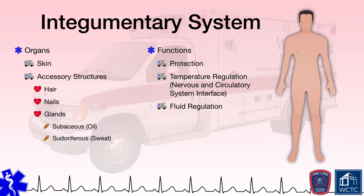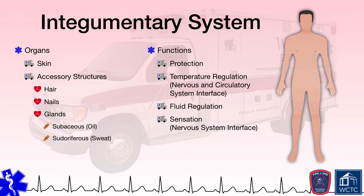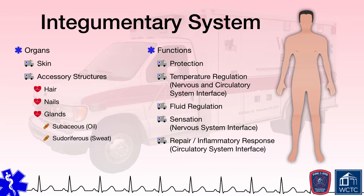Dehydration of the body is also a very real concern and the integumentary system serves as a vapor barrier to help the body's internal environment retain water. Without the skin, internal organs would dry out rapidly. This is actually a consideration for fluid replacement therapy for burn victims; with the skin significantly burned and damaged, the body loses water at an alarming rate. The skin contains a vast network of sensory nerves that provide feedback to the brain as to external environmental factors that can include heat, cold, pressure, pleasure, and pain. The integumentary system also has the ability to affect repairs through an inflammatory response in coordination with the circulatory system, which also carries platelets that can stop bleeding.